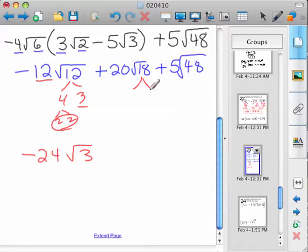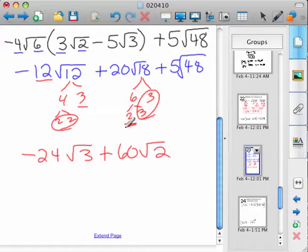18 breaks into 6 and 3, and 2 and 3, so you've got a pair of 3's with a 20 out front, so plus 60 root 2 for this root left over.